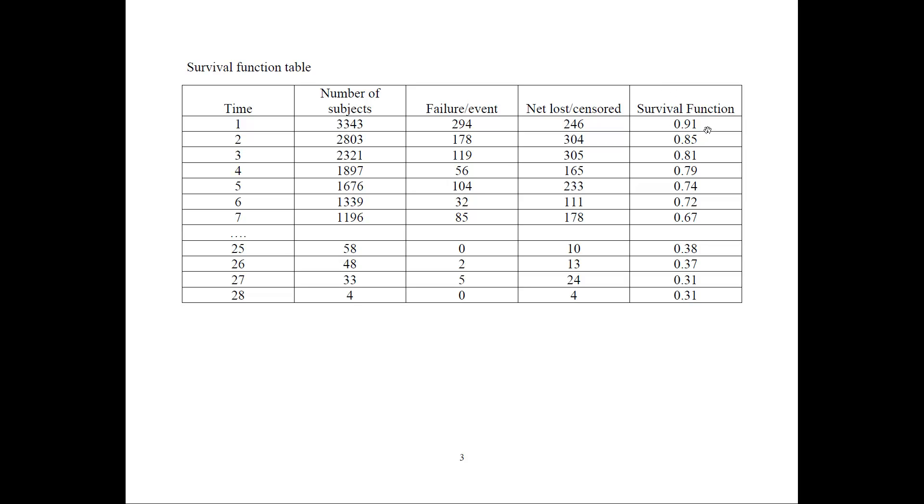So after one period, we have 91% surviving, which means they're still unemployed. The second period, we start with 2,803, and this is this number minus those that failed minus the net lost or censored.